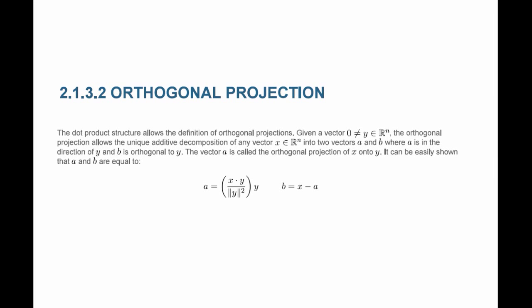Because we are able to define perpendicular vectors, we are able to find what we call orthogonal projections. So if I have a vector y and a vector x, I can find a vector b and a vector a, such that x is equal to a plus b, and b is perpendicular to y. And a is called the orthogonal projection of x on y.